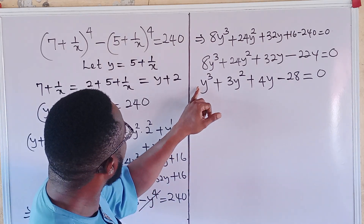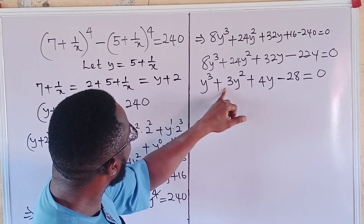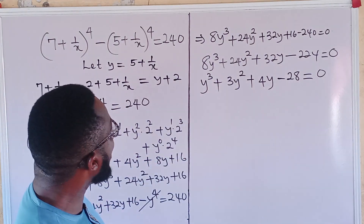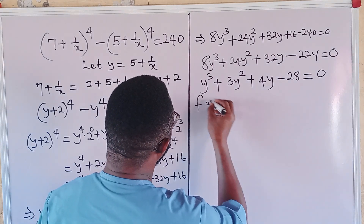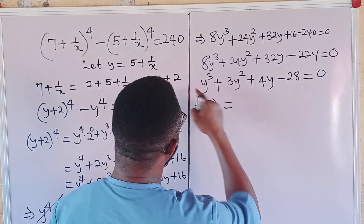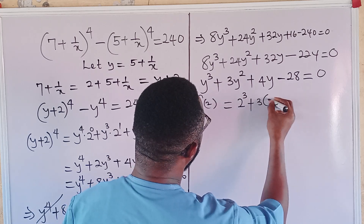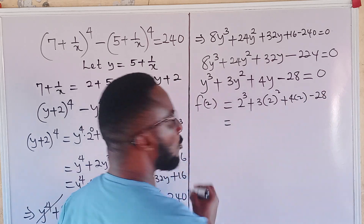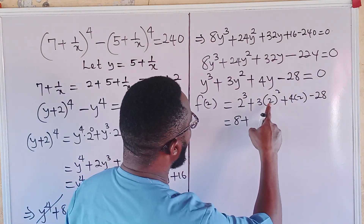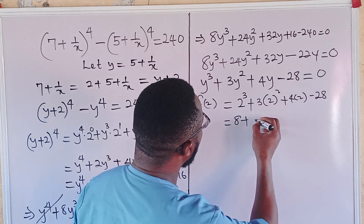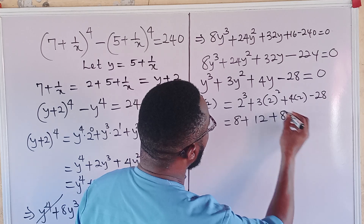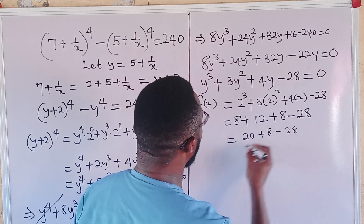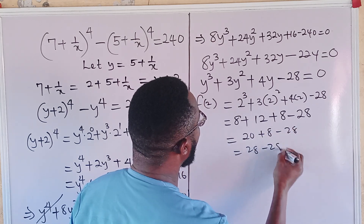If we try y = negative 1: negative 1 plus 3 minus 4 minus 28 — that also cannot equal zero. So we try f(2): 2 cubed plus 3 times 2 squared plus 4 times 2 minus 28 equals 8 plus 12 plus 8 minus 28, which is 28 minus 28 — that equals zero!